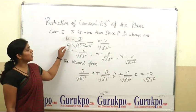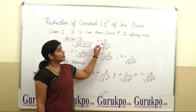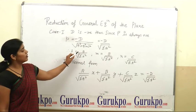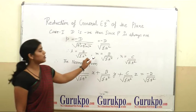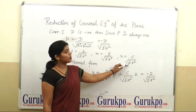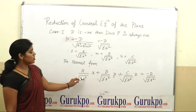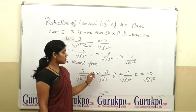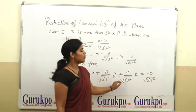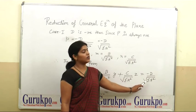Case 2: If D is negative, then since P is always positive, we can write P is equal to minus D upon square root of A square plus B square plus C square, or minus D upon square root of summation of A square. Therefore, L will be A upon square root of summation of A square, M is equal to B upon square root of summation of A square, and N is equal to C upon square root of summation of A square. In this case, the normal form of the plane will be: A upon square root of summation of A square multiplied by x, plus B upon square root of summation of A square multiplied by y, plus C upon square root of summation of A square multiplied by z, is equal to minus D upon square root of summation of A square.